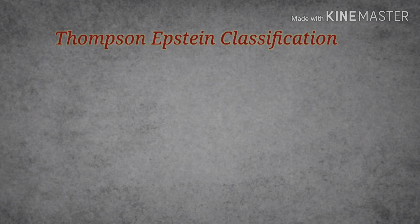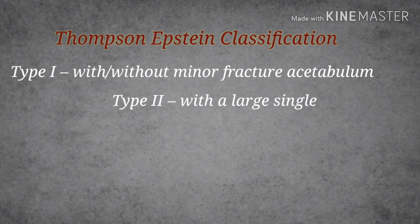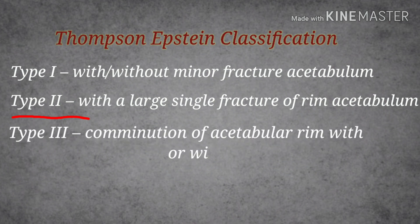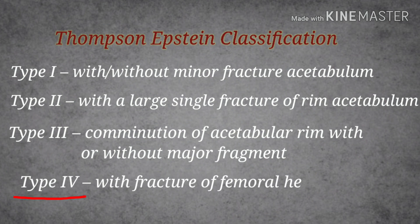The Thompson-Epstein classification has four types: Type 1 is dislocation with or without minor fracture of the acetabulum. Type 2 involves a large single fracture of the rim of the acetabulum. Type 3 is a comminuted fracture of the acetabular rim with or without major fragments. Type 4 involves a fracture of the femoral head with hip dislocation.